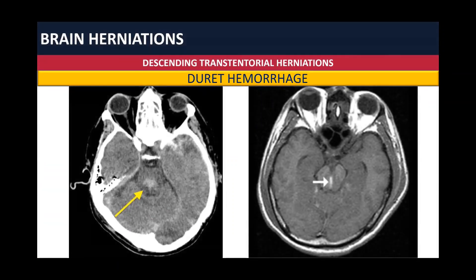The classical appearance of Duret hemorrhage is a single, small, round hemorrhage located in the midline of the medulla or pons near the pontomesencephalic junction, like you can see here. Often, however, these hemorrhages can be multiple.